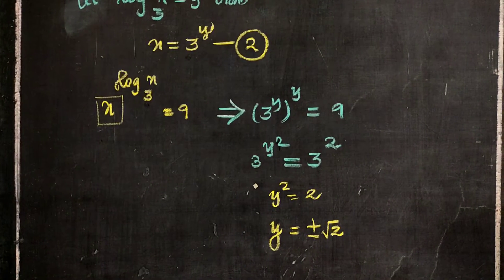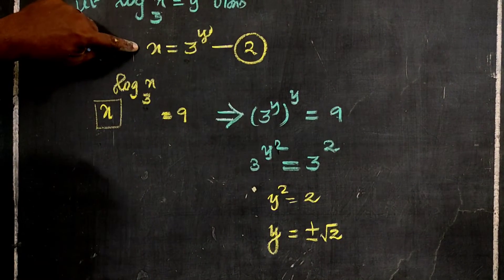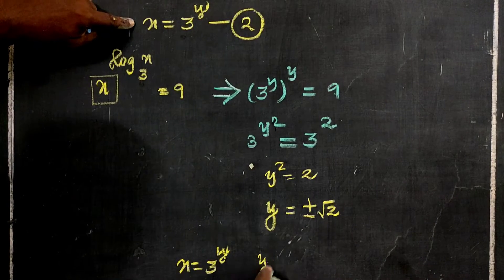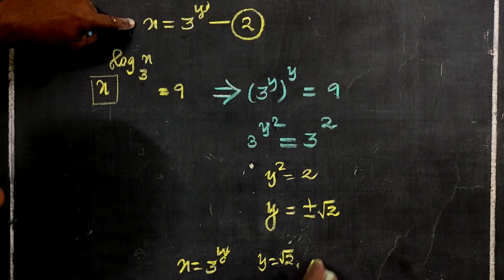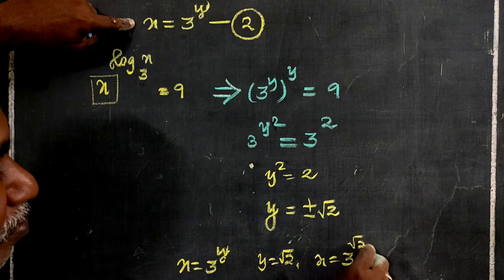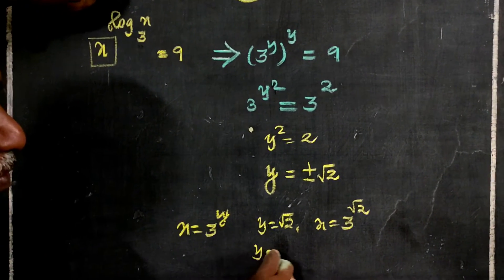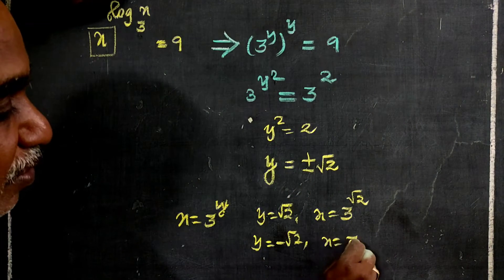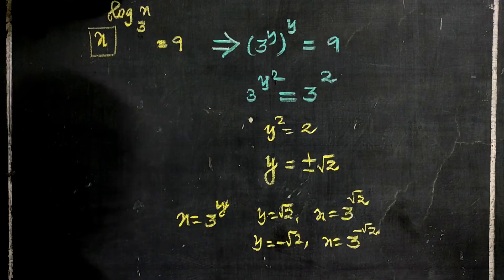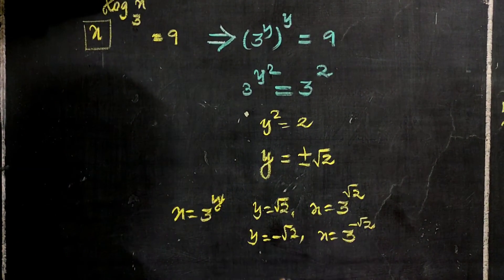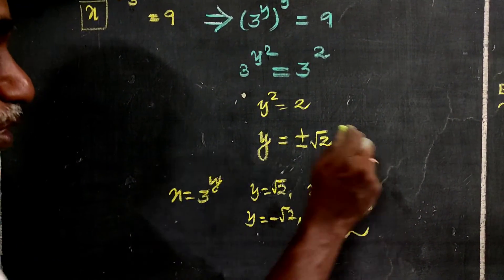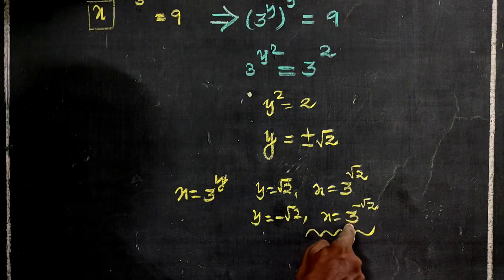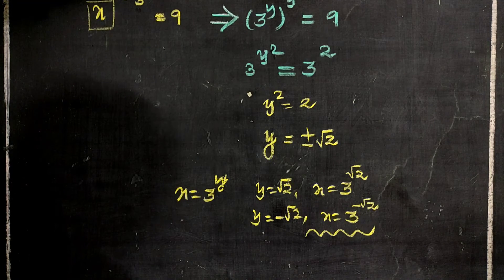y is equal to plus or minus root 2. If y is equal to minus root 2, then x is equal to 3 power minus root 2. Therefore, x is equal to 3 power root 2 or 3 power minus root 2. This is the answer.